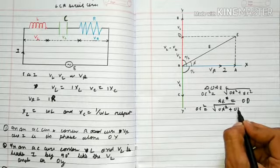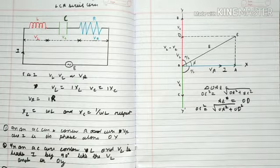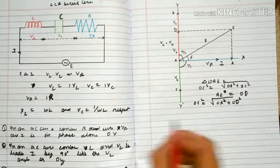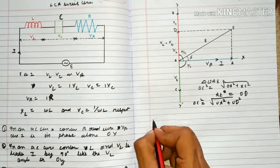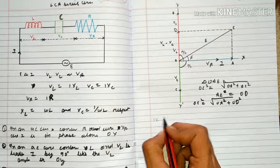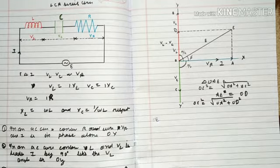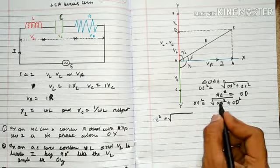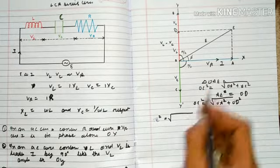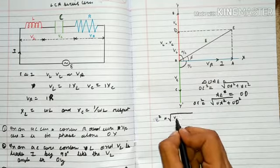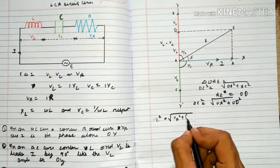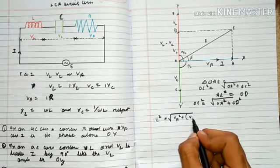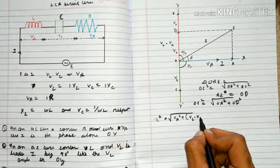Putting their values: OE² = VR² + (VL - VC)². This is also written as I²R² + I²(XL - XC)².